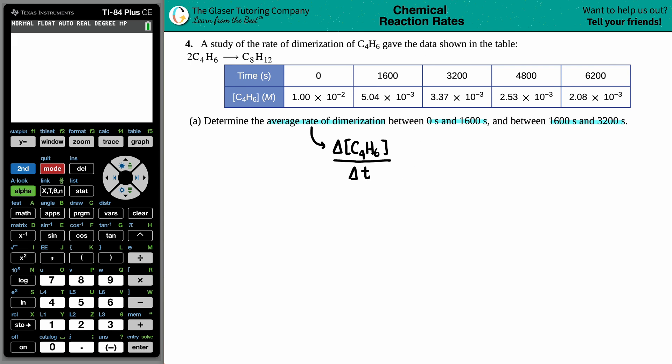Now, let's figure out these rates. The first one we're going to do is from 0 seconds all the way to 1,600 seconds. That's beautiful because we have 0 second information right here, and we have 1,600 second information right next door. So for this one, I don't have to draw a graph because I have the information right here. At 0 seconds, I know that that concentration was 1.00 times 10 to the negative second molarity. And I know that at 1,600, the concentration changed to 5.0 times 10 to the negative third.